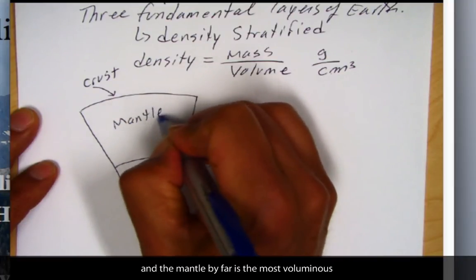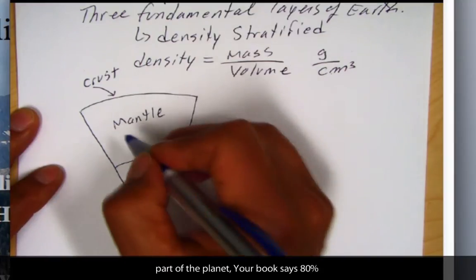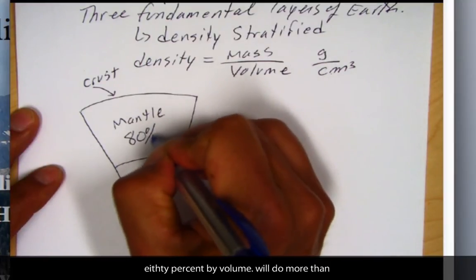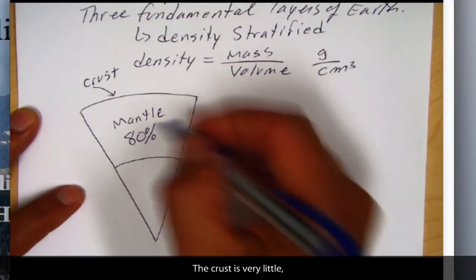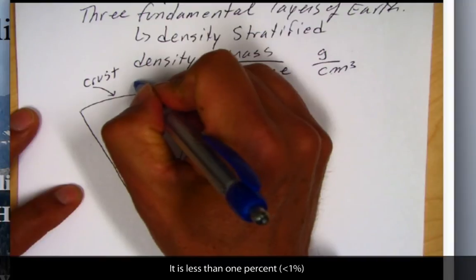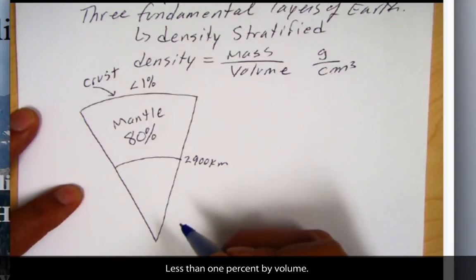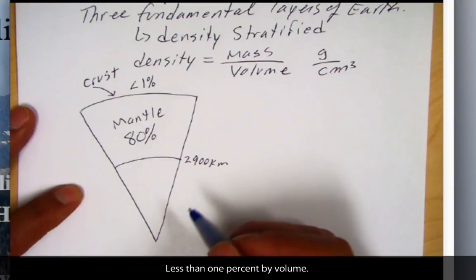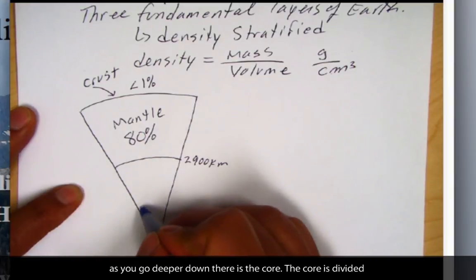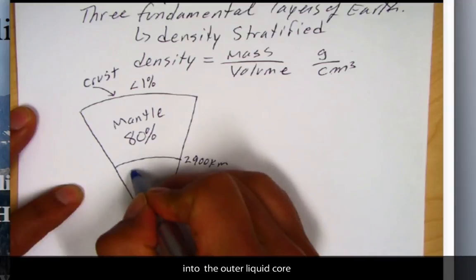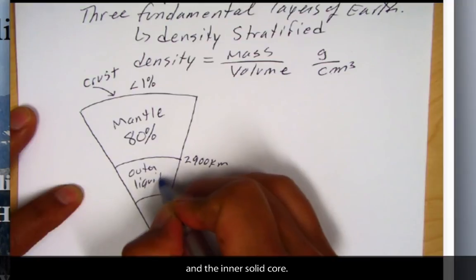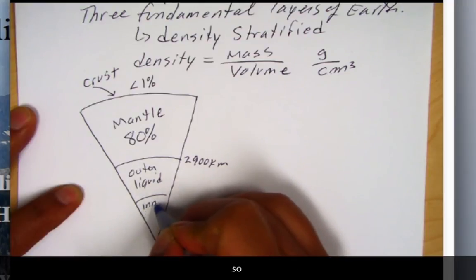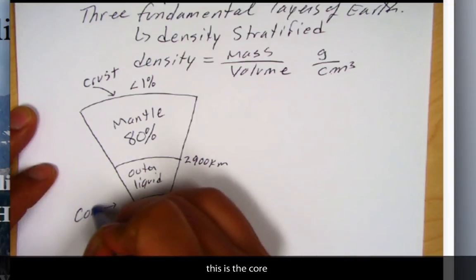And the mantle, by far, is the most voluminous part of the planet. Your book says 80%. So, 80% by volume. It's a little bit more than that, but 80% is a good number there. You'll find the crust is very little. It's going to be less than 1% by volume. Now, as we go deeper down, there is a core. But the core is divided into this outer liquid core and an inner solid core.